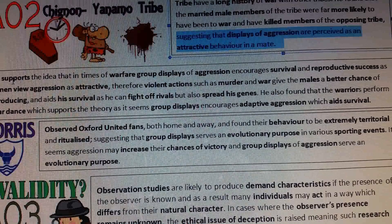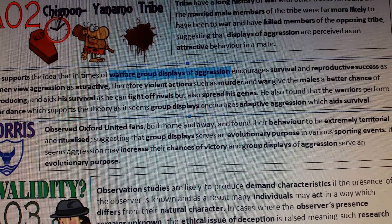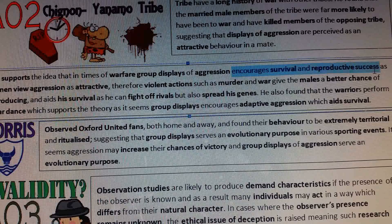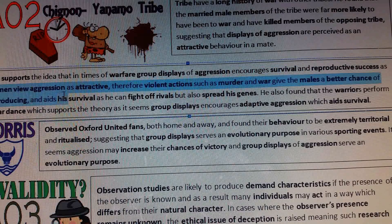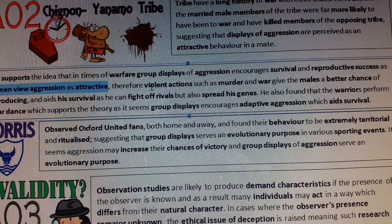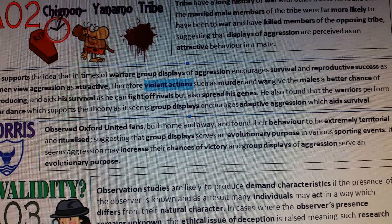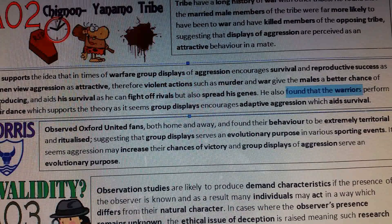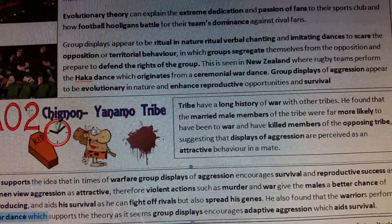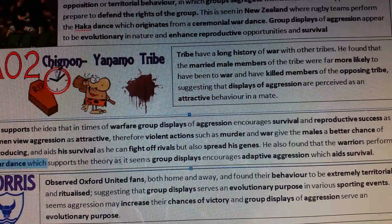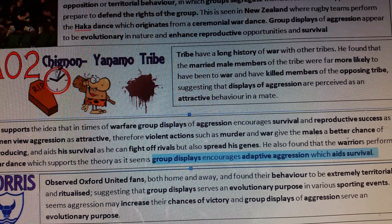This supports the idea that in times of warfare, group displays of aggression encourage survival and reproductive success, as women view aggression as attractive. Therefore, violent actions such as murder and war give the male a better chance of reproducing and aid his survival as he can fight off rivals and spread his genes. He also found that warriors perform a war dance, supporting the theory that group displays encourage adaptive aggression which aids survival.